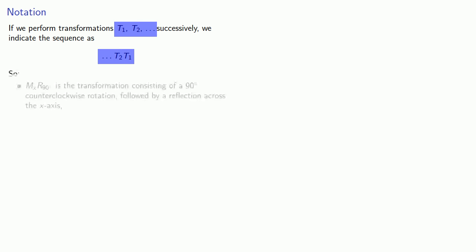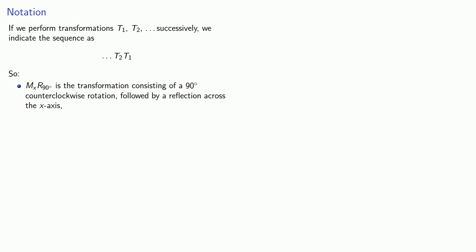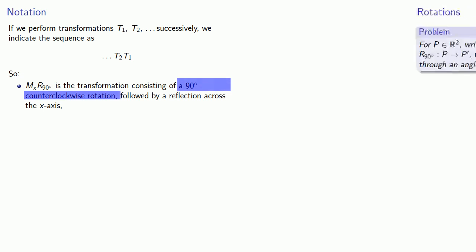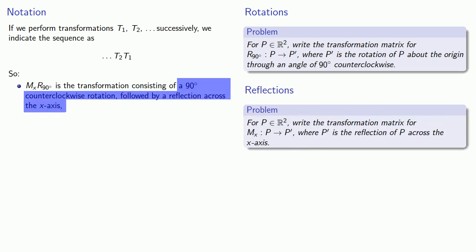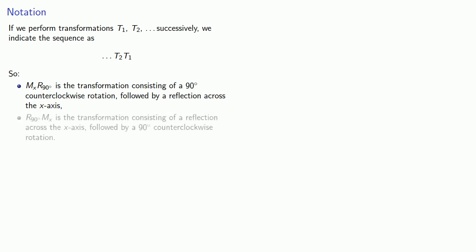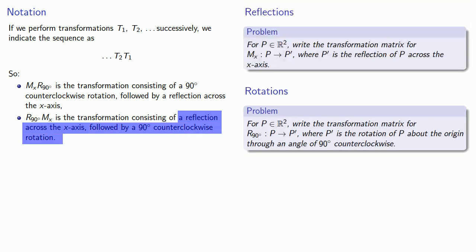For example, Mx∘R90 degrees is the transformation where first I rotate by 90 degrees counter-clockwise, and then I reflect across the x-axis. On the other hand, R90∘Mx is the transformation where first I reflect across the x-axis, and then I rotate 90 degrees counter-clockwise. Because this is still a geometric transformation, we can write down the transformation matrix corresponding to this composition.